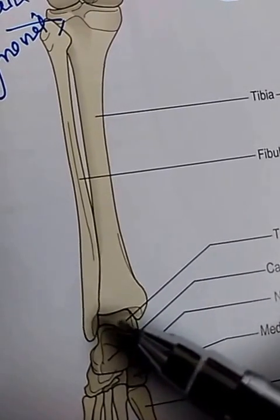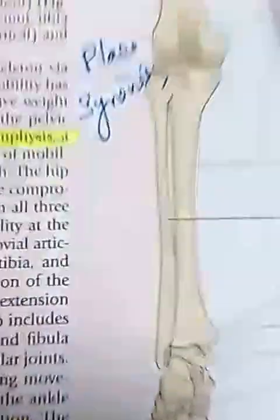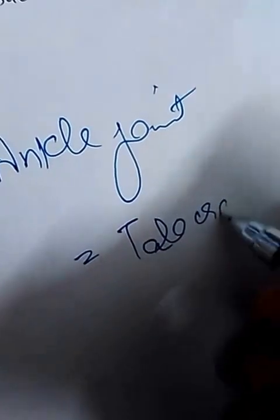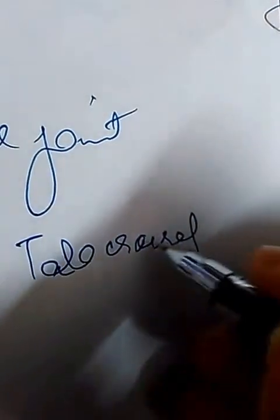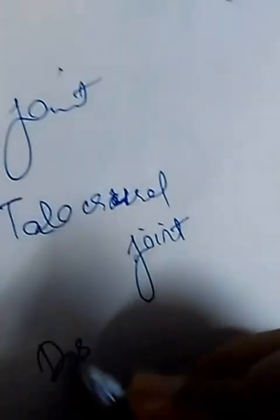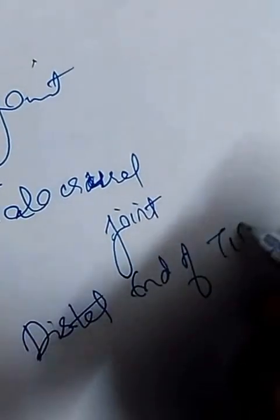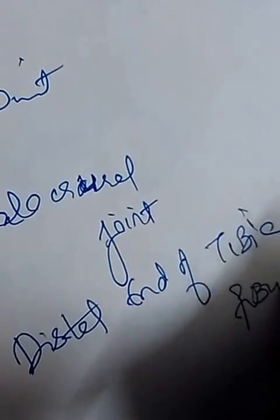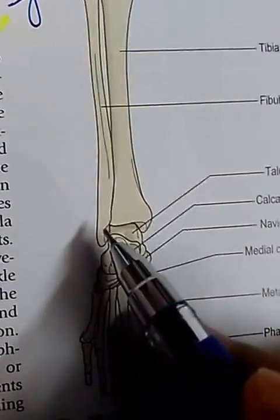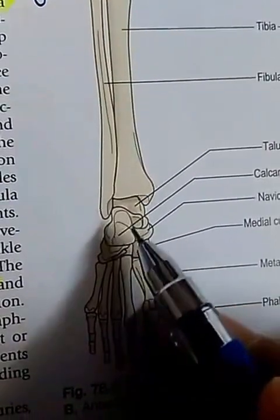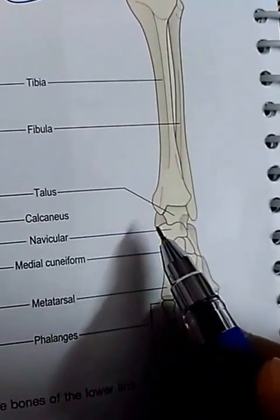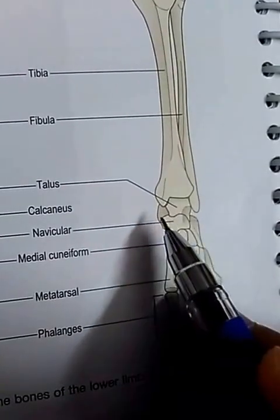The ankle joint is the talocrural joint. It is formed by the distal end of tibia and fibula, which grip the talus. You can see the talus being gripped by the fibula on one side and the tibia on the other.